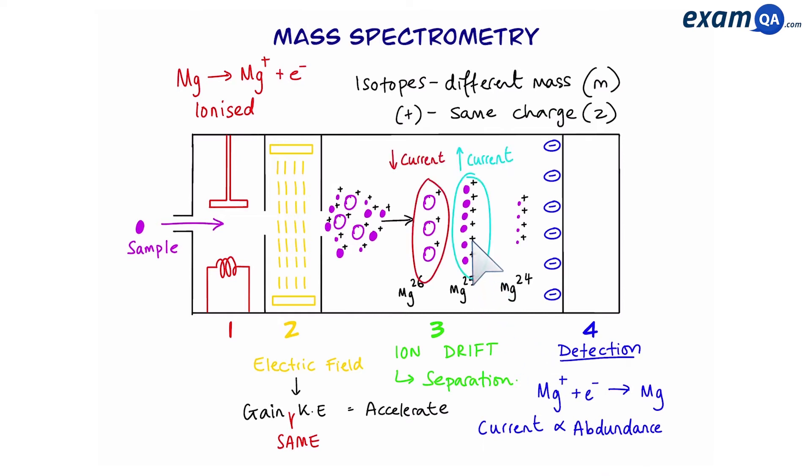The size of the current is proportional to the abundance. So we can see here that magnesium-25 has the highest abundance and therefore will create the highest current, and 26 has the lowest abundance, so the lowest current.